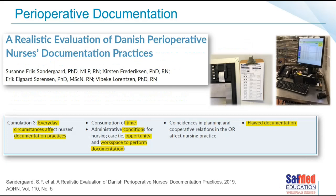The research found that a number of things affected the quality of documentation, including the culture of the department — if senior members of the team didn't enforce good record keeping, the whole team wouldn't be great at their records either. When staff are busy and have time constraints, the quality of documentation was worse. Administrative things like workspace, having a place to write, and access to pens all affect the quality of record keeping.